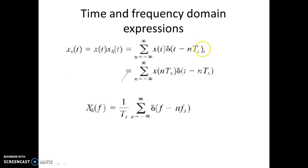The sampled signal xs(t) is x(t) into x_delta(t), which is x(t) into train of impulses, which by the formula is x(nTs) into delta(t - nTs). x(nTs) is the value of x(t) at t equal to nTs. x_delta(f) is given by (1/Ts) sigma n equals minus infinity to infinity delta(f - nfs). This is the frequency domain of the delta function.